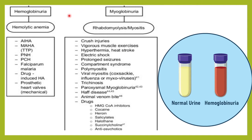Hemoglobinuria means in the urine there is hemoglobin — the RBCs are lysed and the hemoglobin which is inside the RBCs is coming into the urine. For the RBCs to lyse, this happens in hemolytic anemia. Hemolytic anemia can happen in autoimmune hemolytic anemia, microangiopathic hemolytic anemia, paroxysmal nocturnal hemoglobinuria, falciparum malaria, drug-induced hemolytic anemia, or prosthetic mechanical valves. All these factors can cause lysis of the RBCs and the hemoglobin can come in the urine.